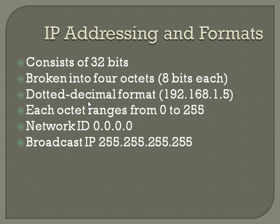So eight bits of ones and zeros in each of those octets. It's usually represented in dotted decimal format, because it's easier for humans to understand. So you've got there the 192.168.1.5, rather than just being a set of 32 ones and zeros.